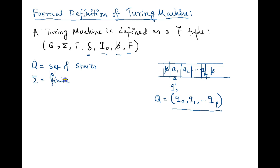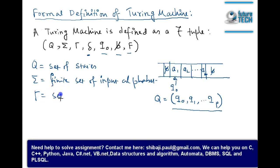Obviously they are all finite sets. Finite set of input alphabet. Gamma is the set of tape alphabet.